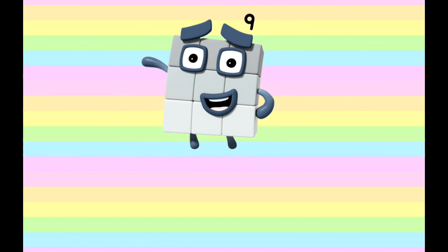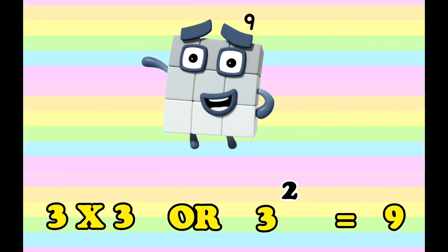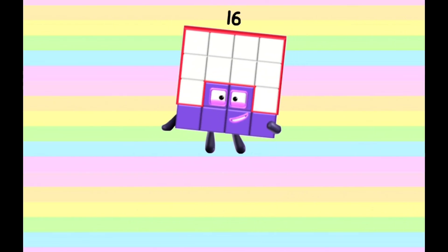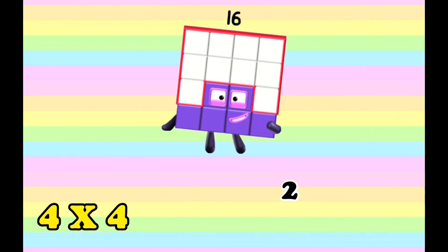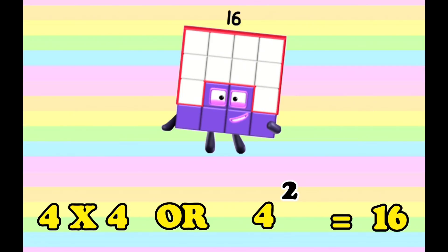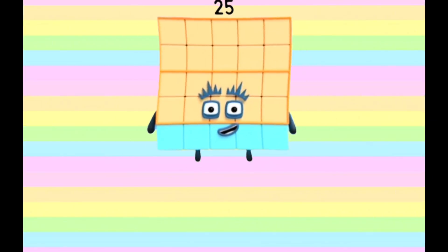9. 3 times 3, or 3 squared, is equals to 9. 16. 4 times 4, or 4 squared, is equals to 16.